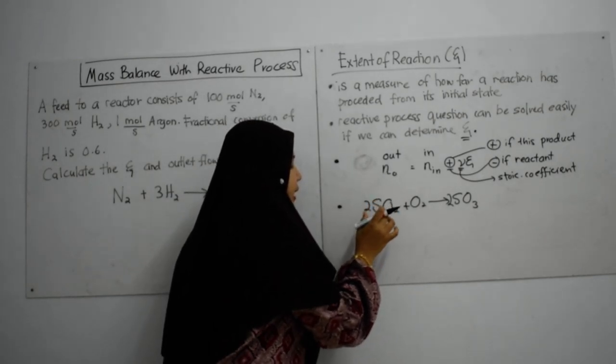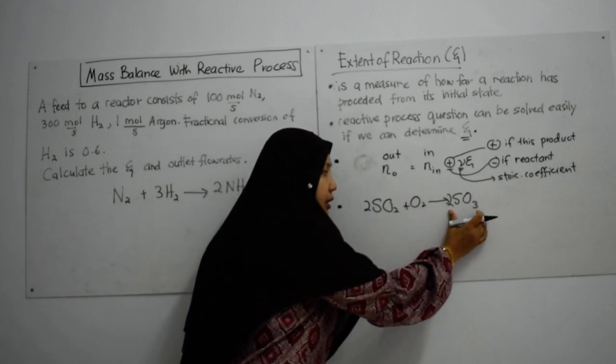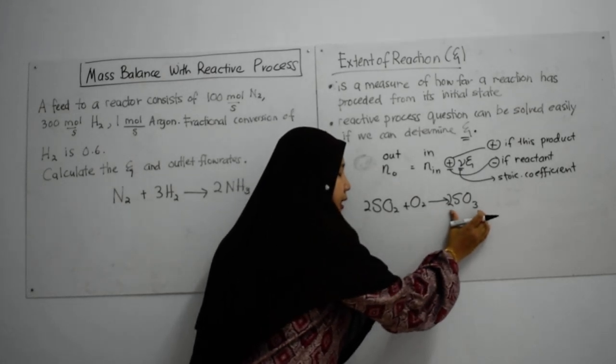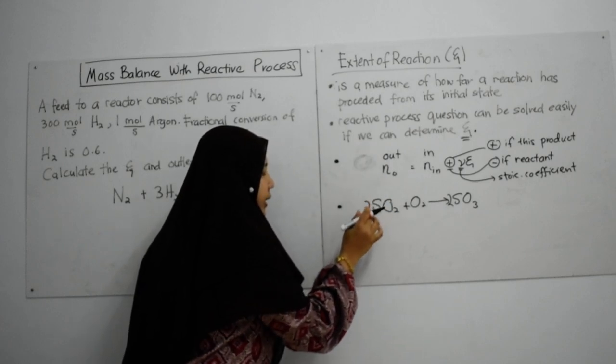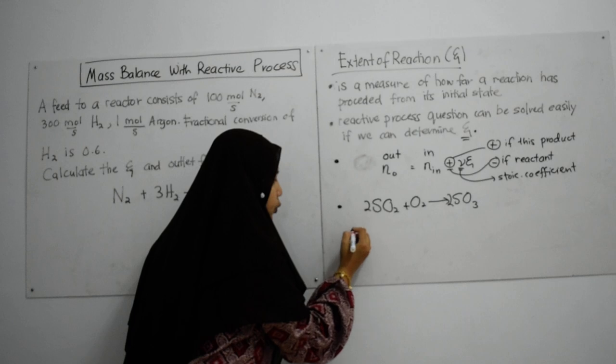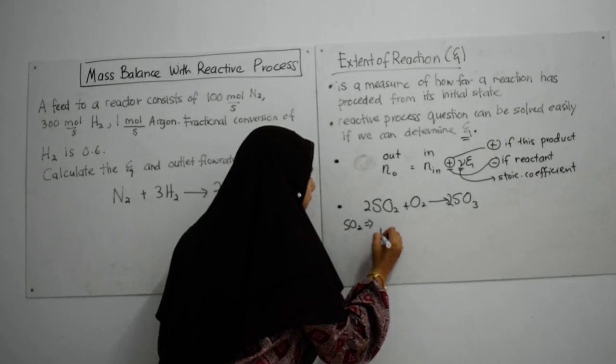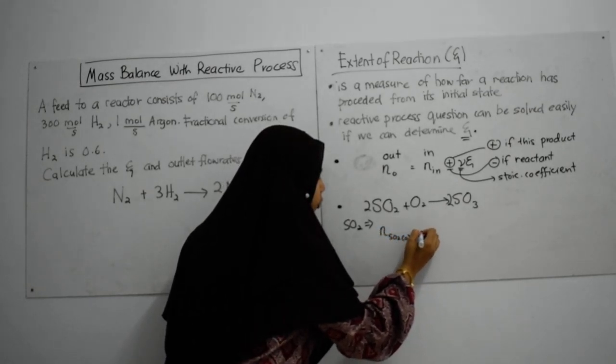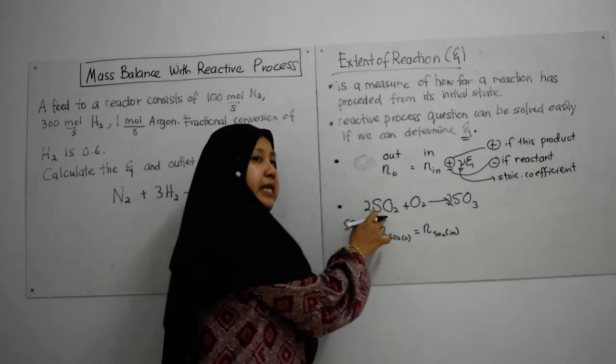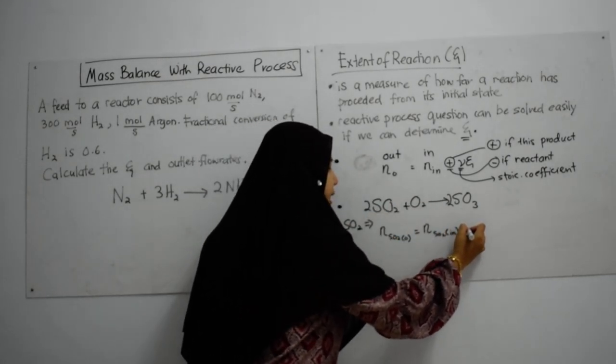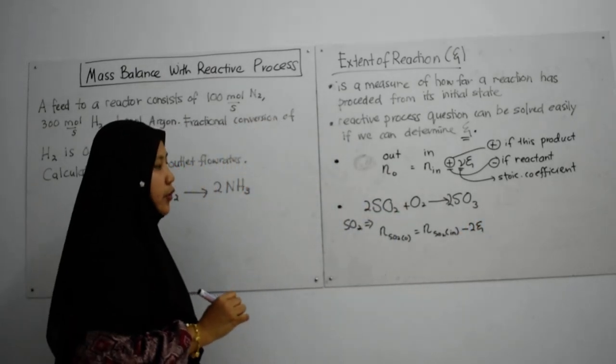We have to write equation for each compound that we have in the stoichiometric equation. Let's write the extent of reaction equation for SO2. For SO2, we write n SO2 out equivalent to n SO2 in. Since it is a reactant, it's minus 2 times extent of reaction.